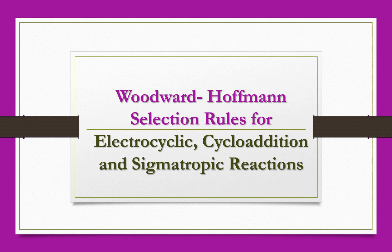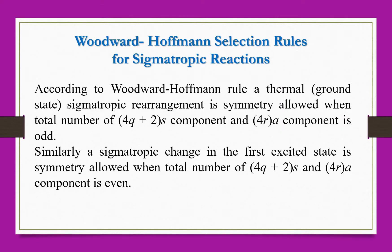Hello all. In this video we are discussing the Woodward-Hoffmann selection rule for sigmatropic reactions. First of all, we will talk about the rules which govern the sigmatropic reaction. According to the Woodward-Hoffmann rule, a thermal sigmatropic rearrangement is symmetry allowed when the total number of 4q plus 2s components and 4rA components is odd.